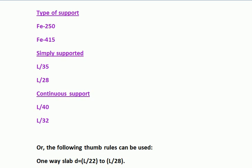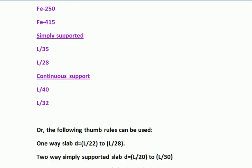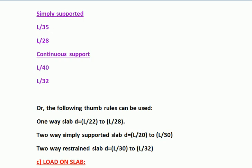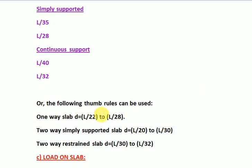The following thumb rules can be used: For one-way slab, small d equals L/22 to L/28. For two-way simply supported slab, small d is L/22 to L/30. For two-way restrained slab, small d is L/32.